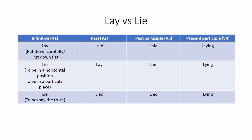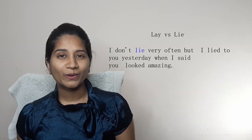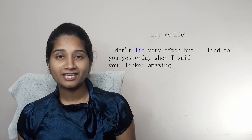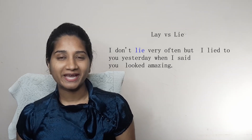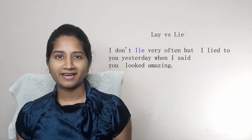The verb to lie also means to tell a lie, and it's a regular verb. The verb forms are lie, lied, lied, and lying. For example: I don't lie very often, but I lied to you yesterday when I said you looked amazing.